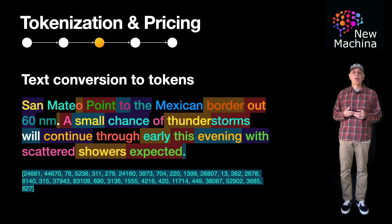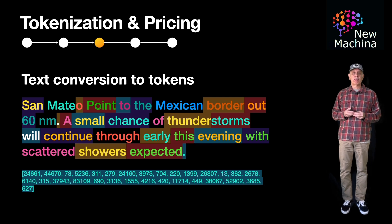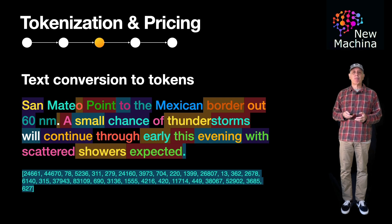In this example, you can think of a vector as an array of integers. The LLM processes this vector to generate a response.